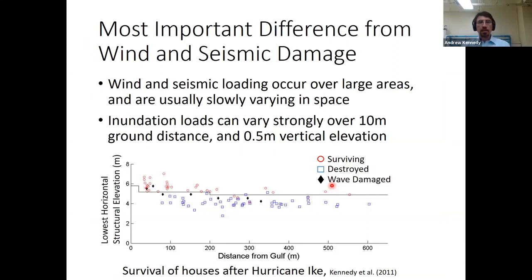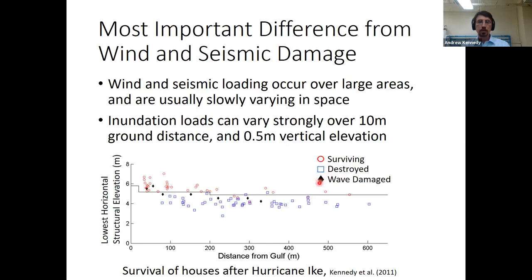A lot of people here will be from the wind and seismic area, and the loading is very different for coastal inundation loads. Seismic loading covers very large areas — very slowly varying in space. Wind is similar: large scale, can be varied by upstream roughness, but slowly varying in space. Inundation loads can vary very strongly in 10 meters of ground distance and half a meter of vertical elevation. The best example is from Hurricane Ike: this plot shows distance from the Gulf of Mexico on the x-axis and the elevation of the lowest horizontal structural member on the y-axis. Red symbols are surviving houses, blue are destroyed. You can see a very strong division — about half a meter elevation was the difference between survival and destruction.